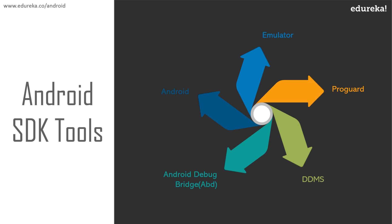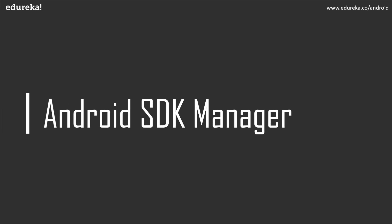To download and install the latest Android APIs and development tools from the internet, Android provides the Android SDK Manager. This manager separates the API tools and different platforms into different packages which you can download. Do note that the SDK Manager comes bundled with the Android SDK — you cannot download it separately. This is exactly how Android SDK works.